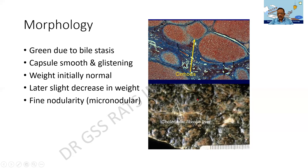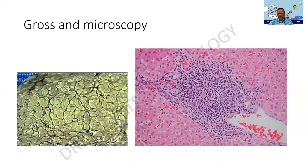Coming to the gross picture, the first striking feature is the hobnail pattern, which is classical of any type of cirrhosis. Secondly, the biliary tinge or greenish tinge is visible — these two are the classical features of biliary cirrhosis. Externally, the nodularity of the hobnail pattern is visible and the cut surface shows paler and darker areas. The paler areas indicate the regenerating parenchyma and the darker lines are the fibrotic lines, with inflammatory infiltrates — some books call them portal triaditis.